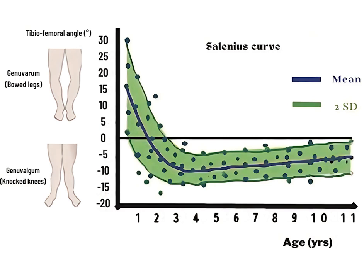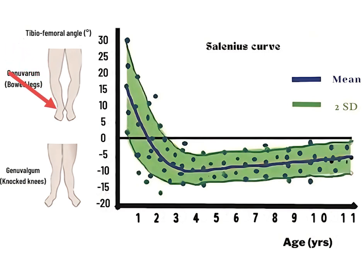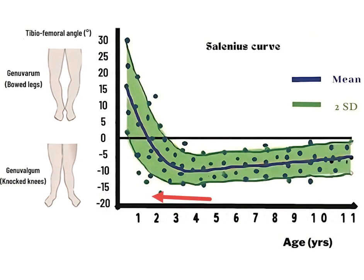As mentioned, most children are born with bow legs. If we measure the angle between the thigh bone and the tibia, we find it is in the region of 15 degrees. As children grow older the legs become straighter and straighter, and by the age of 18 months on average the legs will become fully straight.